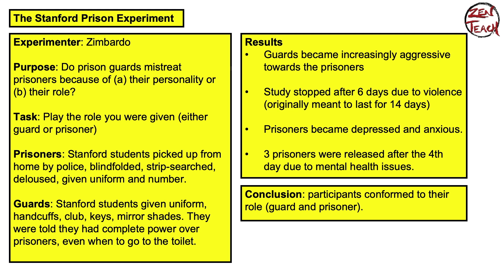So what were the results? Guards became increasingly aggressive towards the prisoners. The study had to be stopped after six days due to the violence the guards were showing — originally the experiment was supposed to go for 14 days, so they didn't even make it halfway through. That's how severe the violence was.